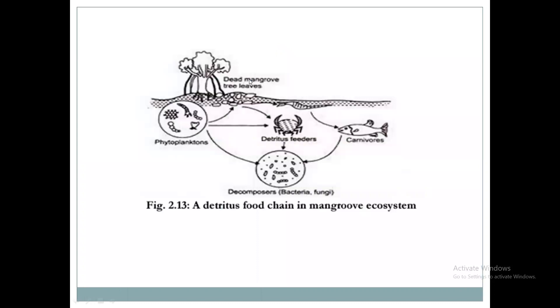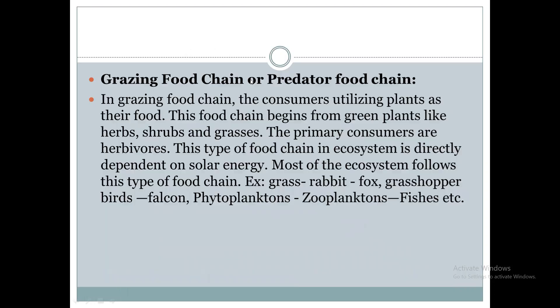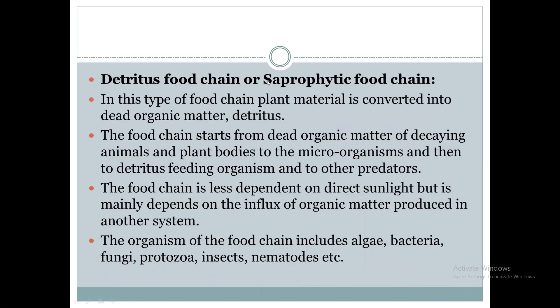Similar types of food chains exist — the grazing food chain or predator food chain, and the detritus food chain or saprophytic food chain.